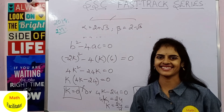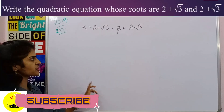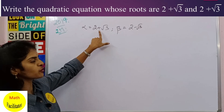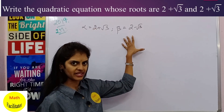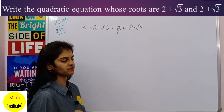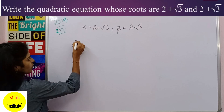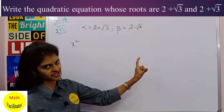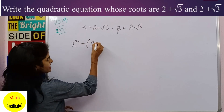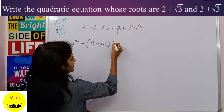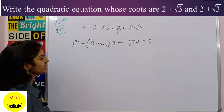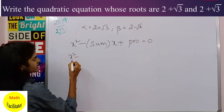The next question: find the quadratic equation whose roots are given. Taking α = 2 + √3 and β = 2 - √3 — this question is given in 2019 as a two-marker. When you want the quadratic equation given the roots, the formula is x² - (sum of roots)·x + (product of roots) = 0.